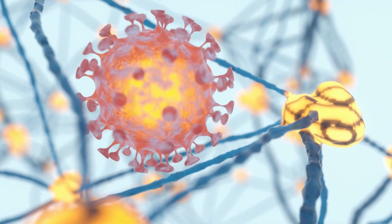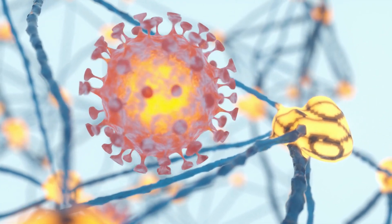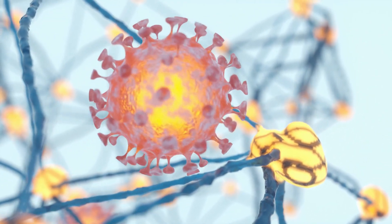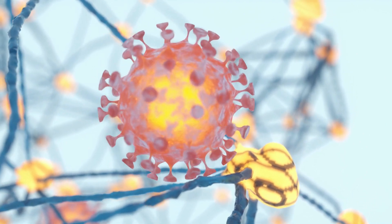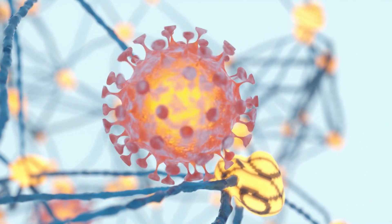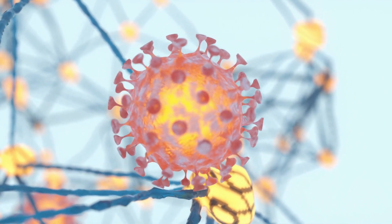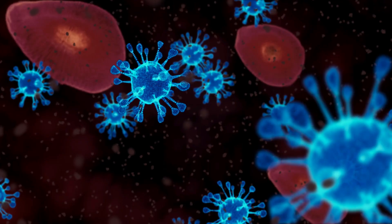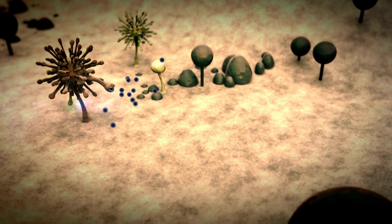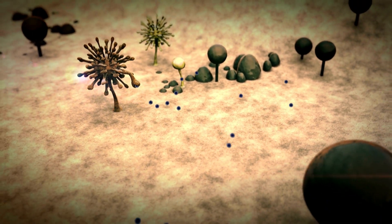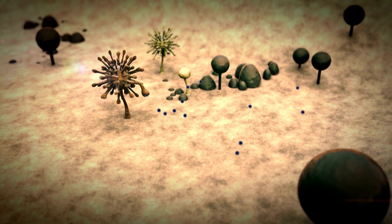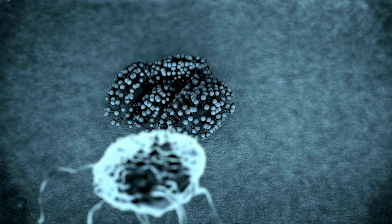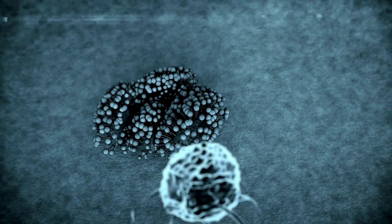Viruses consist of genetic material — DNA or RNA — enclosed in a protein coat. They are obligate parasites that require a host cell to replicate and can infect all types of living organisms. Fungi include molds, yeasts, and mushrooms, and decompose organic matter and recycle nutrients in ecosystems.